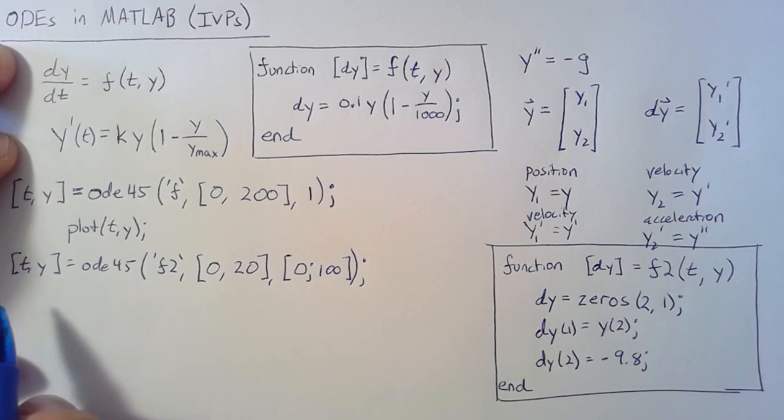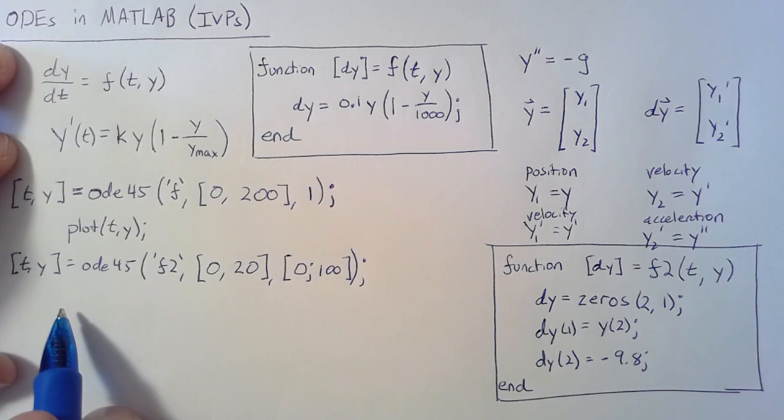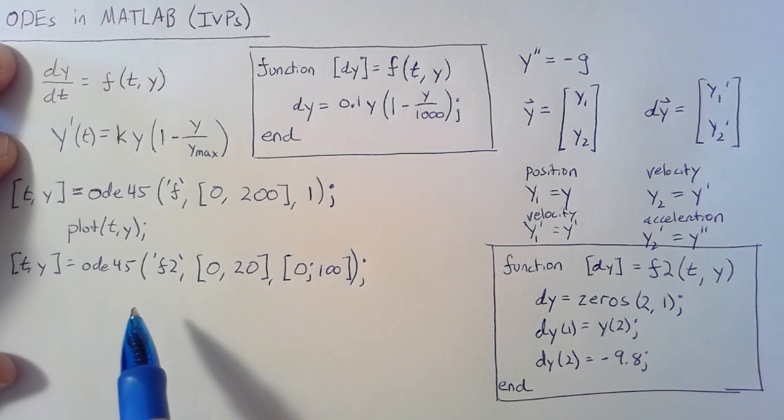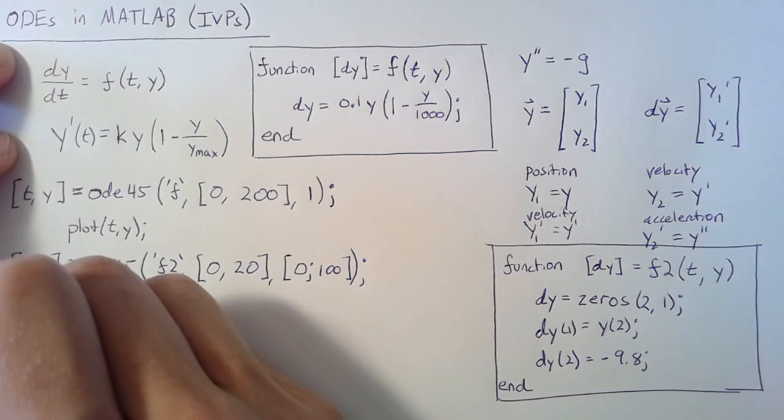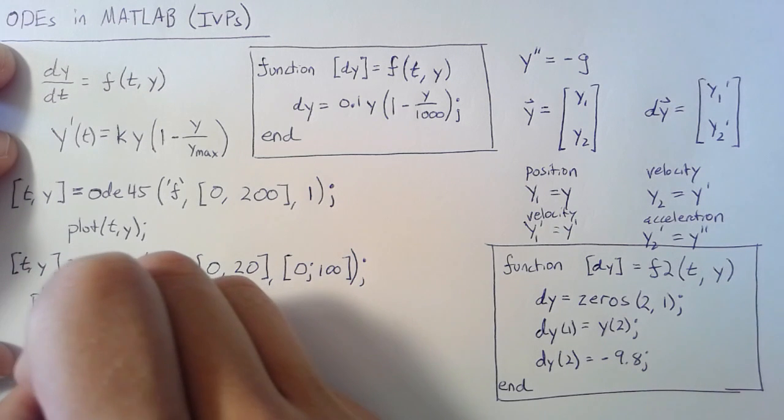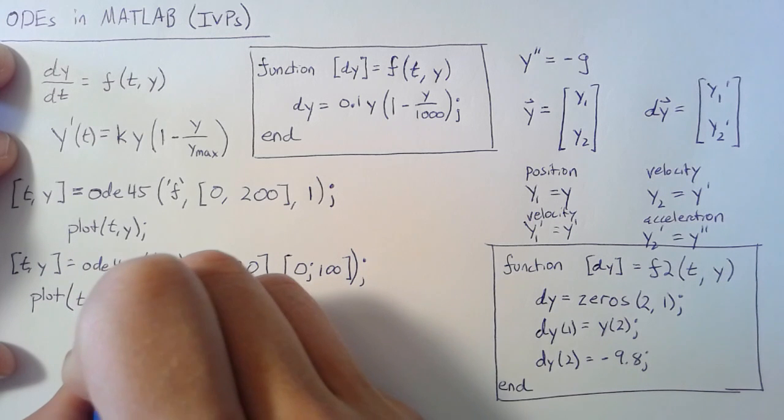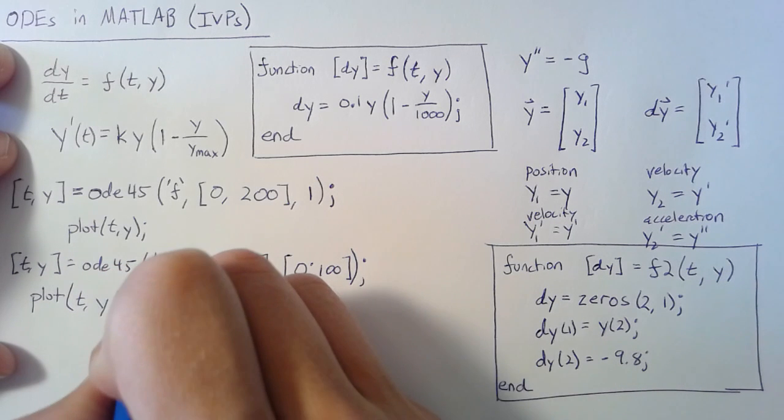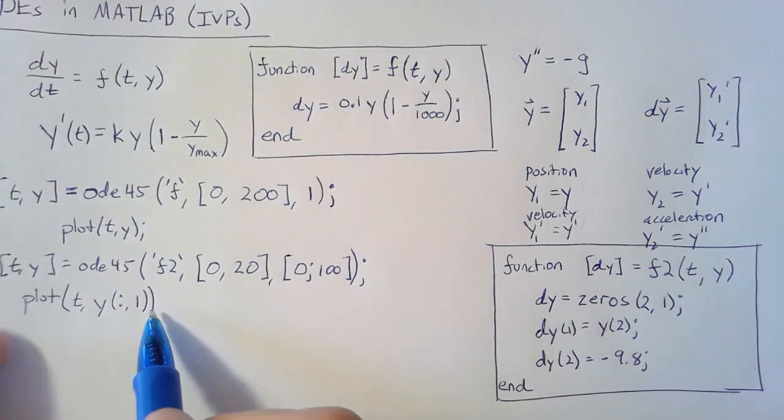Once you have this, it's going to spit out a 2 column matrix. So in order to plot it, you need to grab one of those and plot it against t. If we plot t against position, that will be all of the first column of y. This should give you a nice parabola.